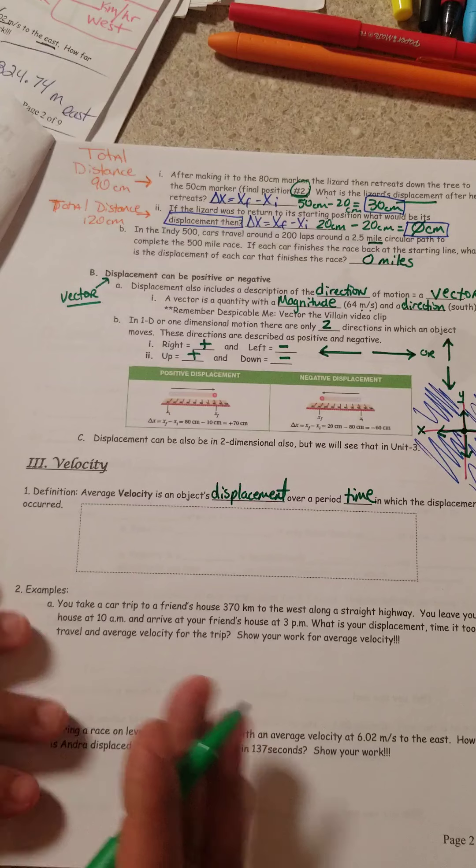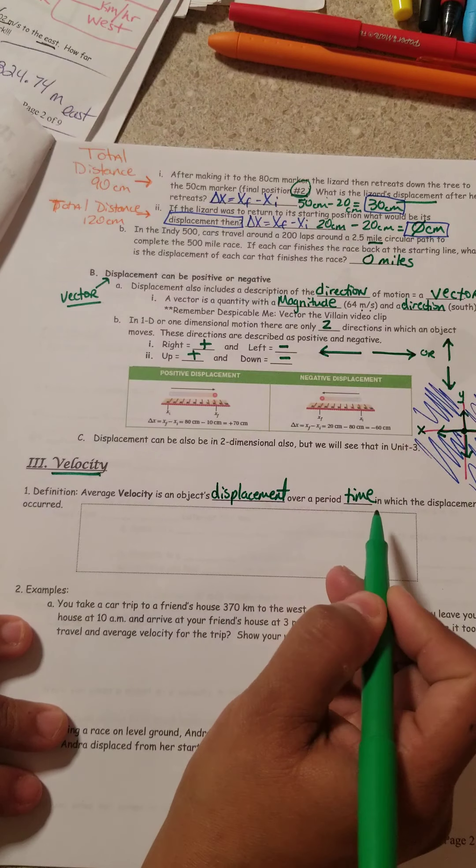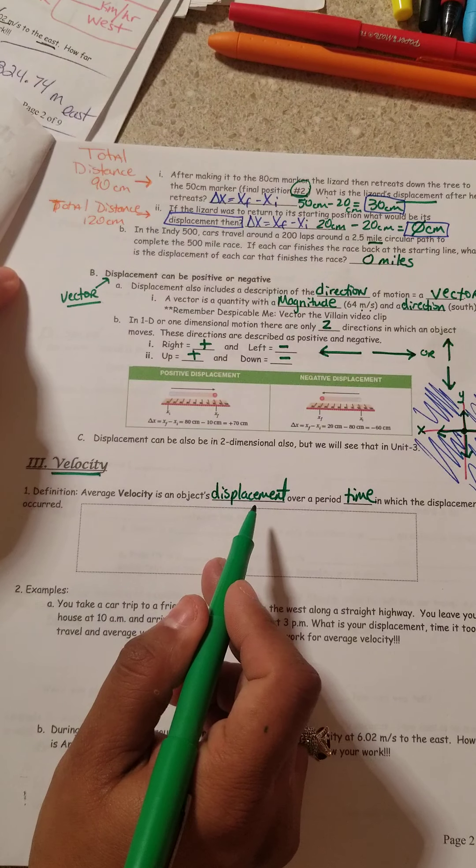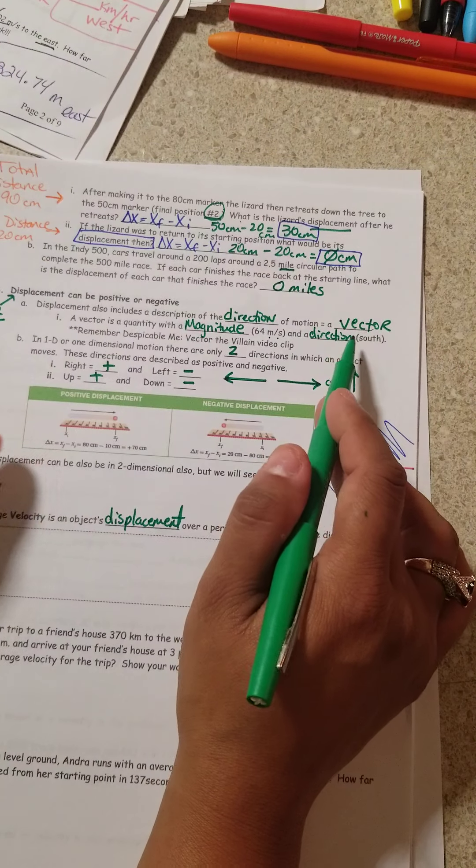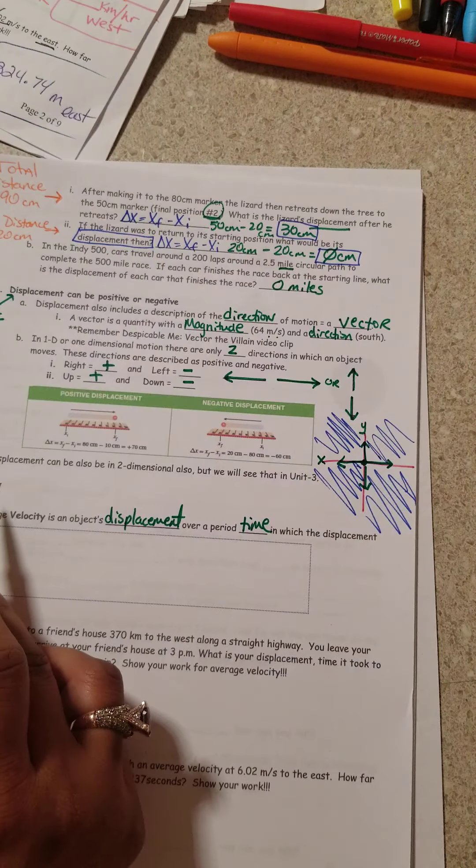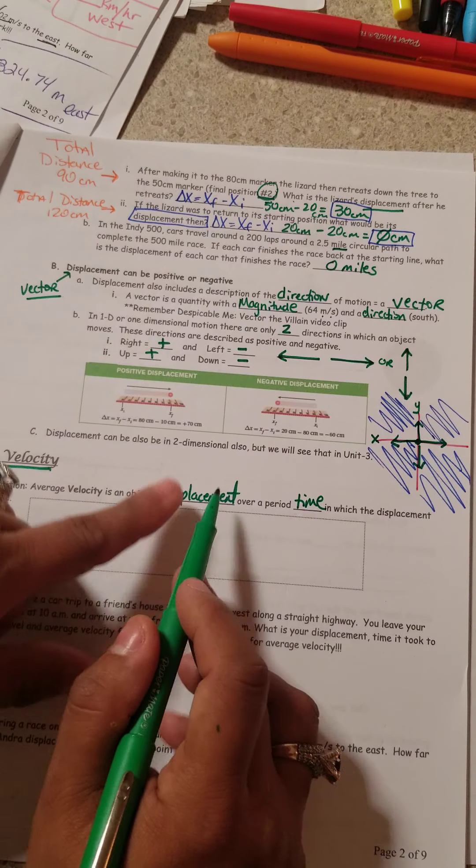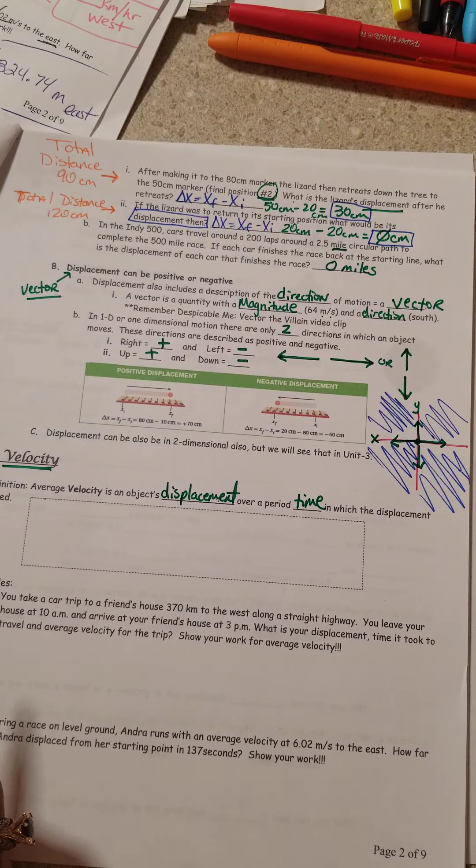I'm going to pause for a moment. Velocity equals the displacement over time. Now, we just talked about displacement. And we said that displacement is a, right here, here's the word, vector. And if velocity's equation has displacement in it and displacement is a vector, then that means that velocity is a vector too.